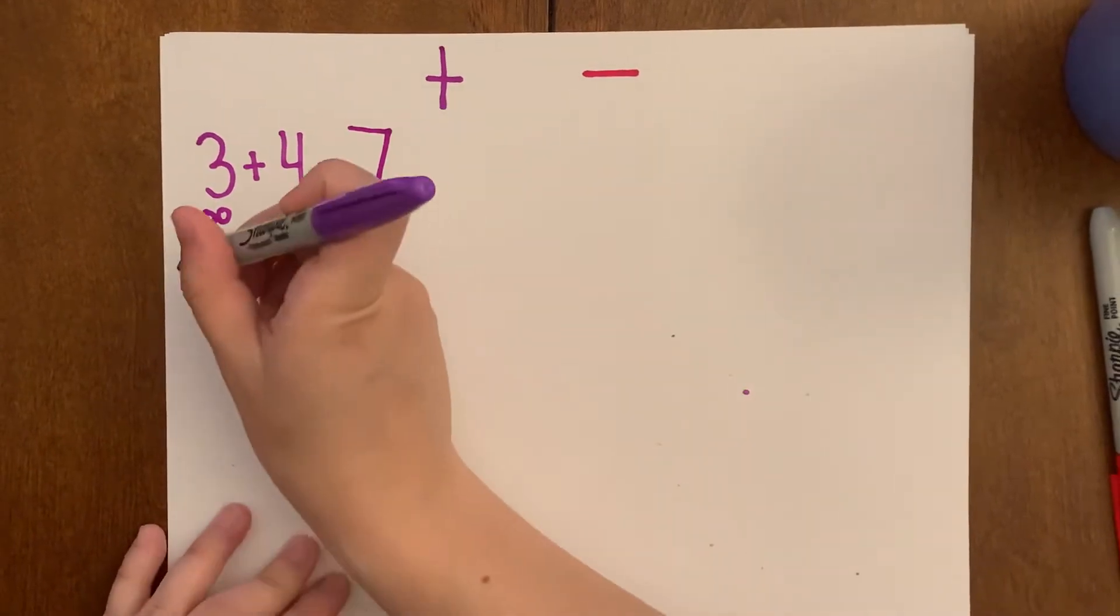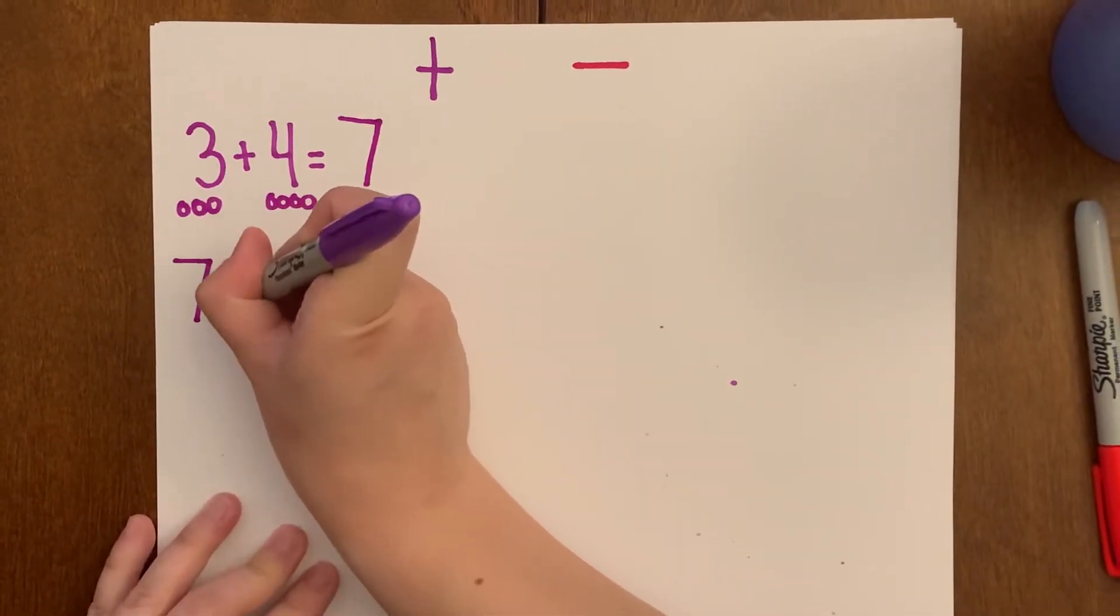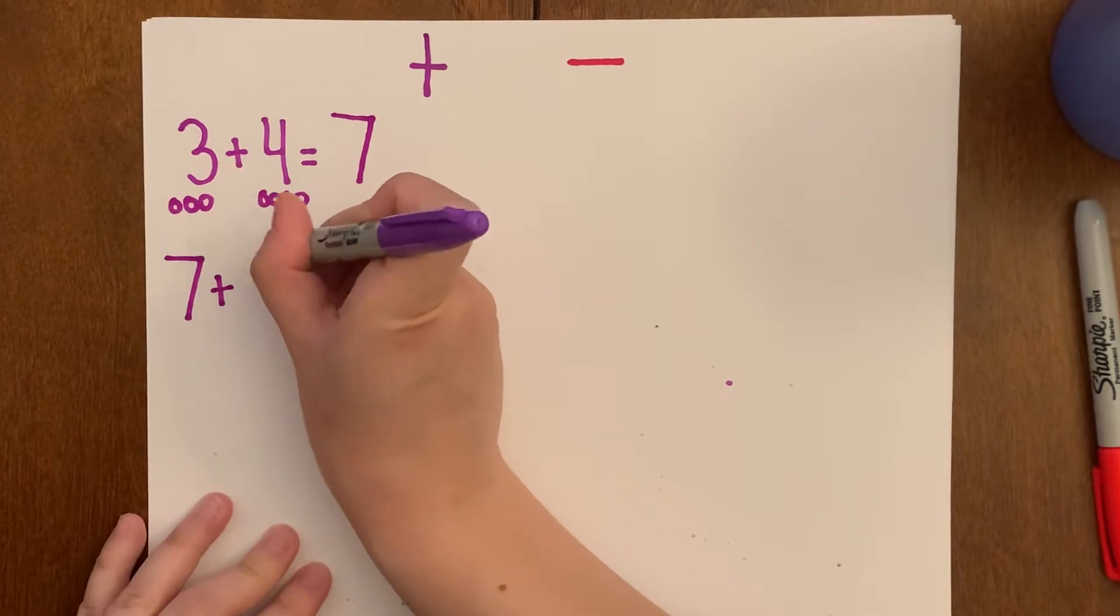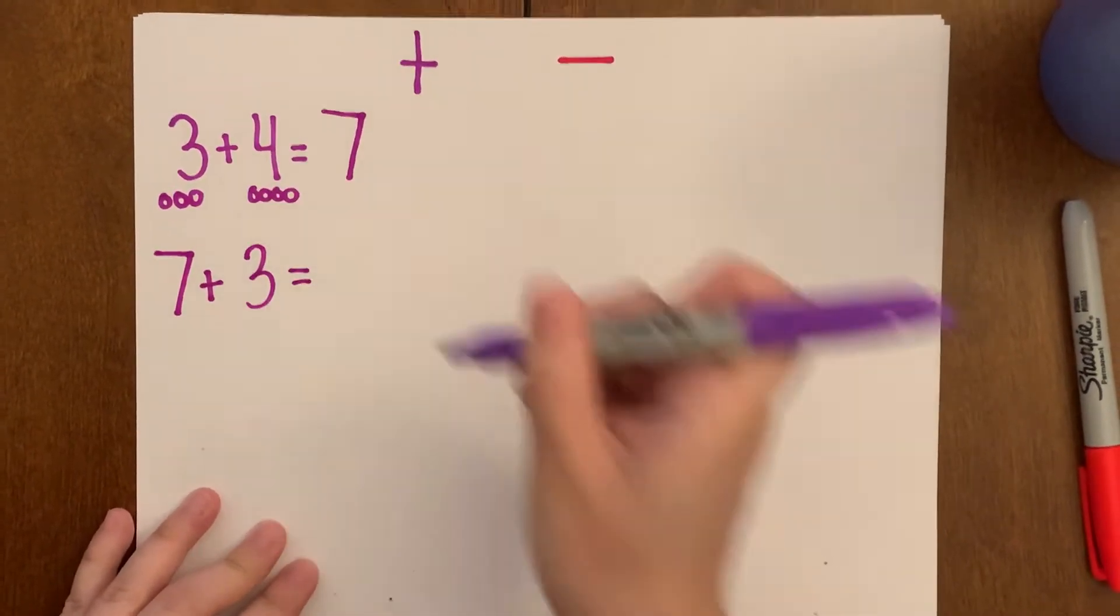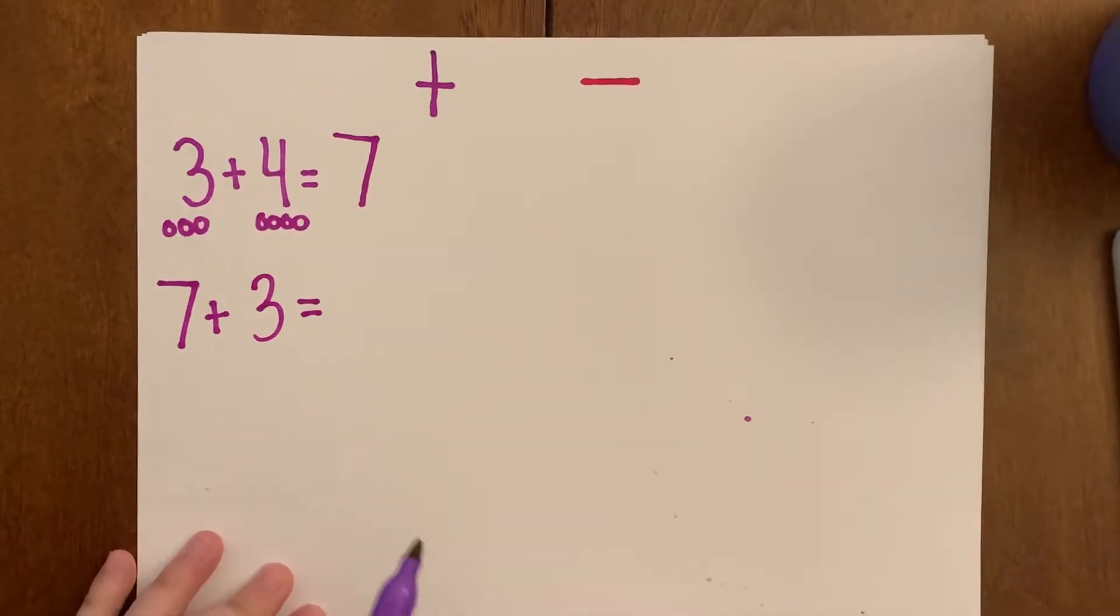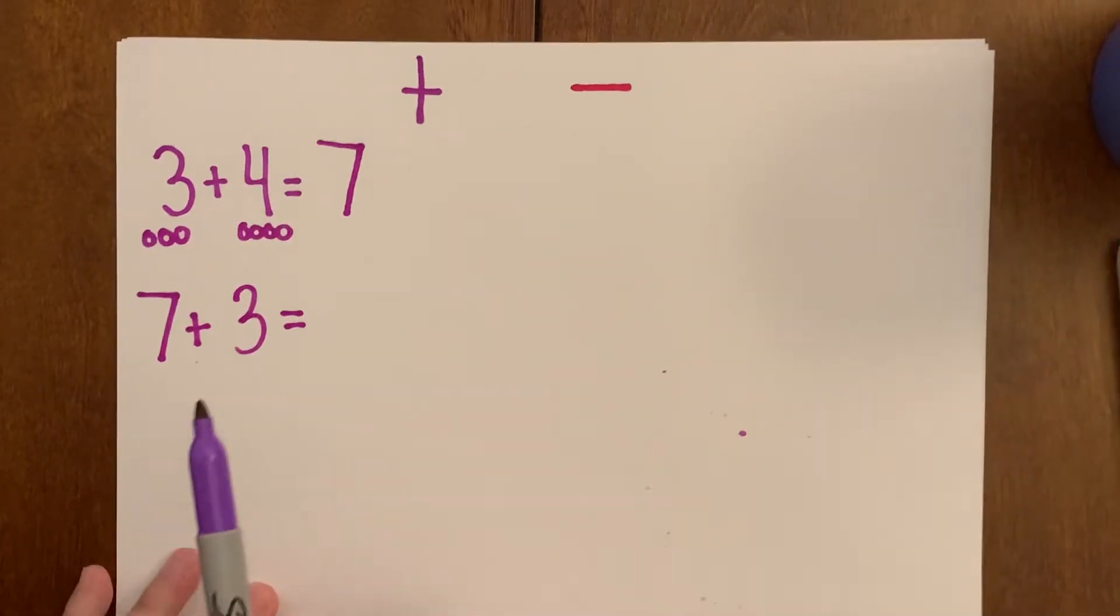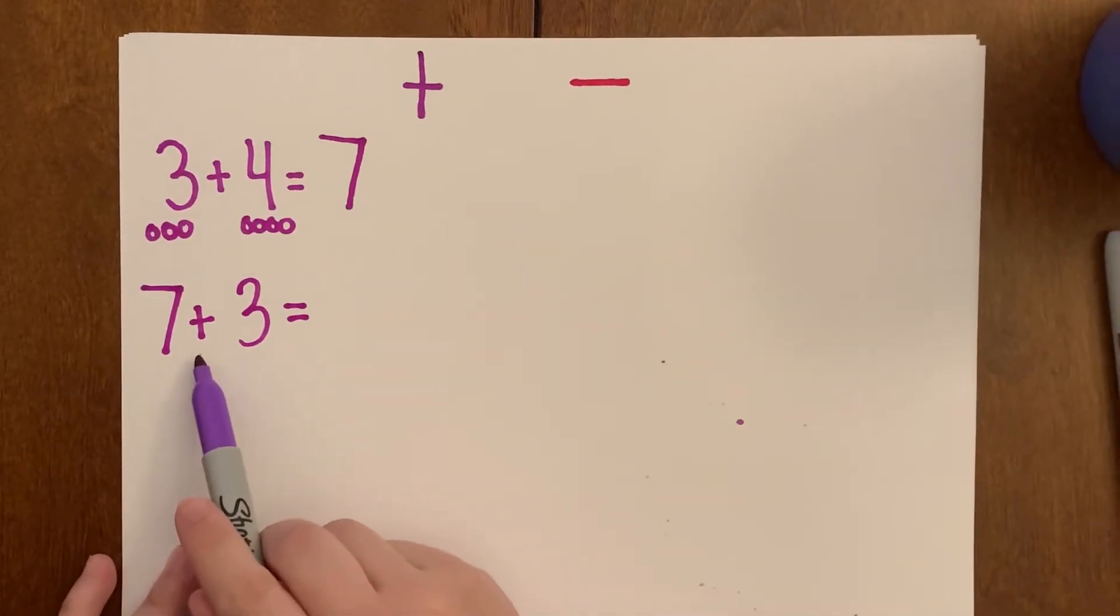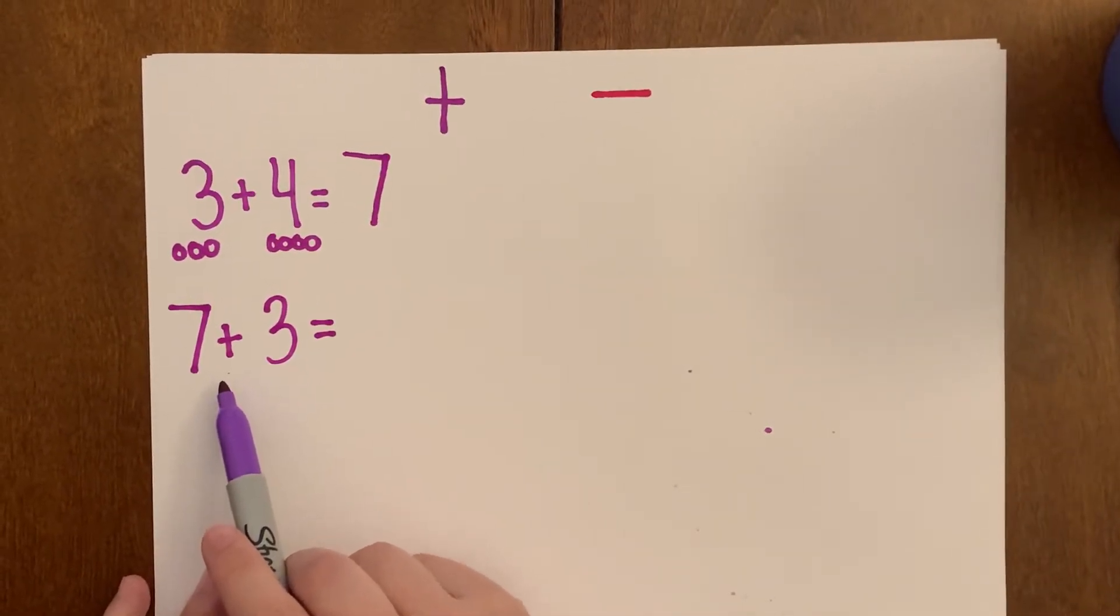All right, let's do another one. Okay, let's read it together. Seven plus three. What is our symbol in this number sentence? Oh, yep. It's another plus. So we are adding.